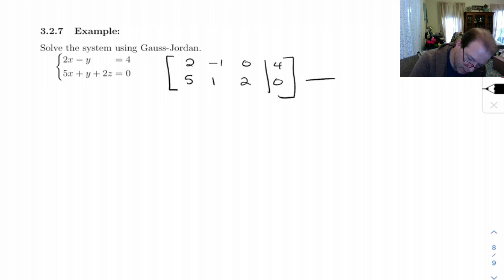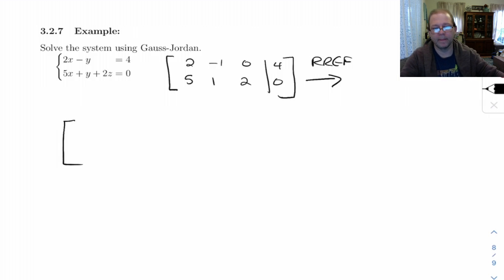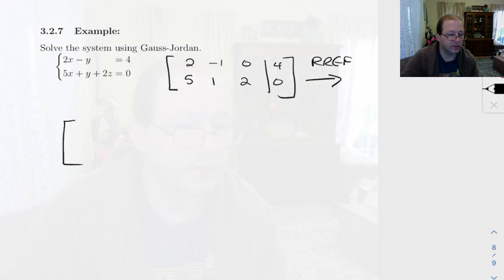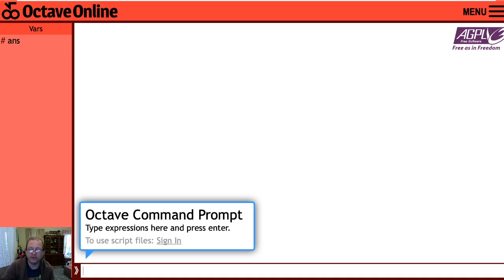Now, I'm going to do this using Octave. So let's jump over there to Octave and enter this in. See, the matrix here is 2, negative 1, 0, 4, 5, 1, 2, 0.